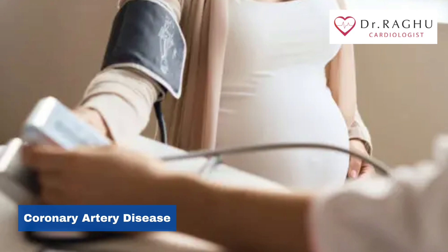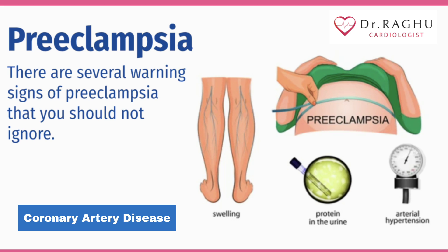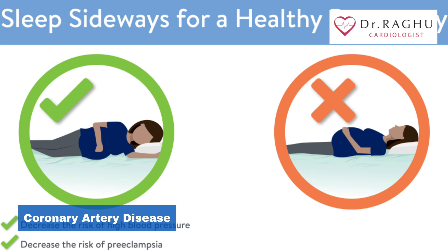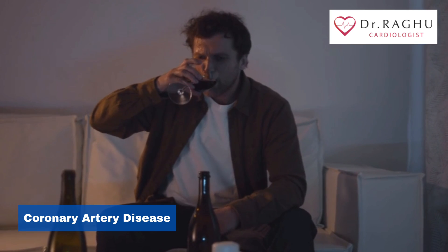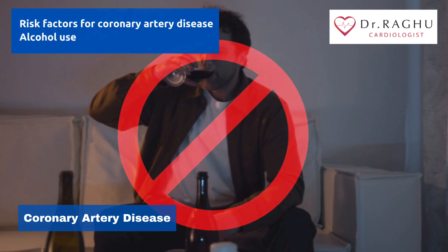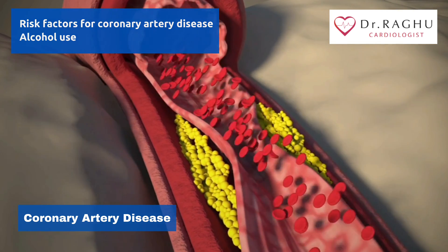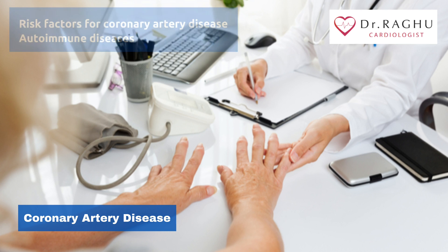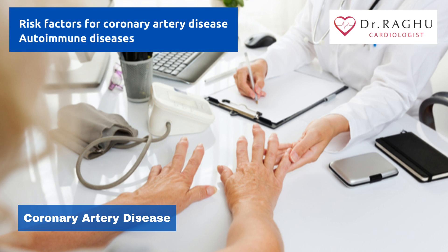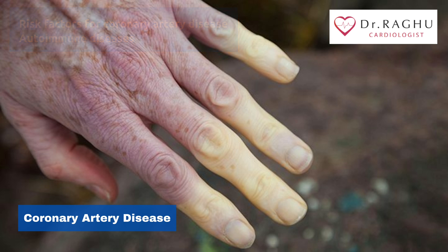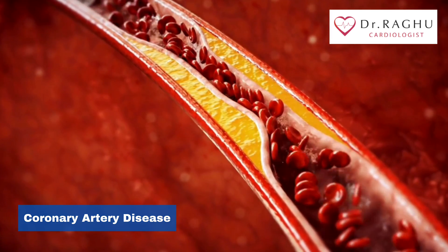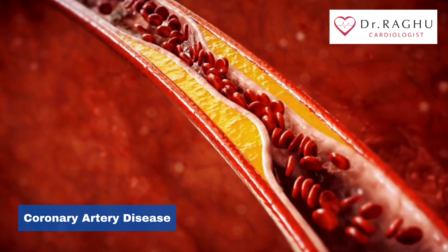Pre-eclampsia is a condition that can develop in women during pregnancy, causing high blood pressure and a higher amount of protein in urine. It can lead to a higher risk of heart disease later in life. Heavy alcohol use can lead to heart muscle damage. People who have other conditions such as rheumatoid arthritis and lupus have an increased risk of buildup of plaque.